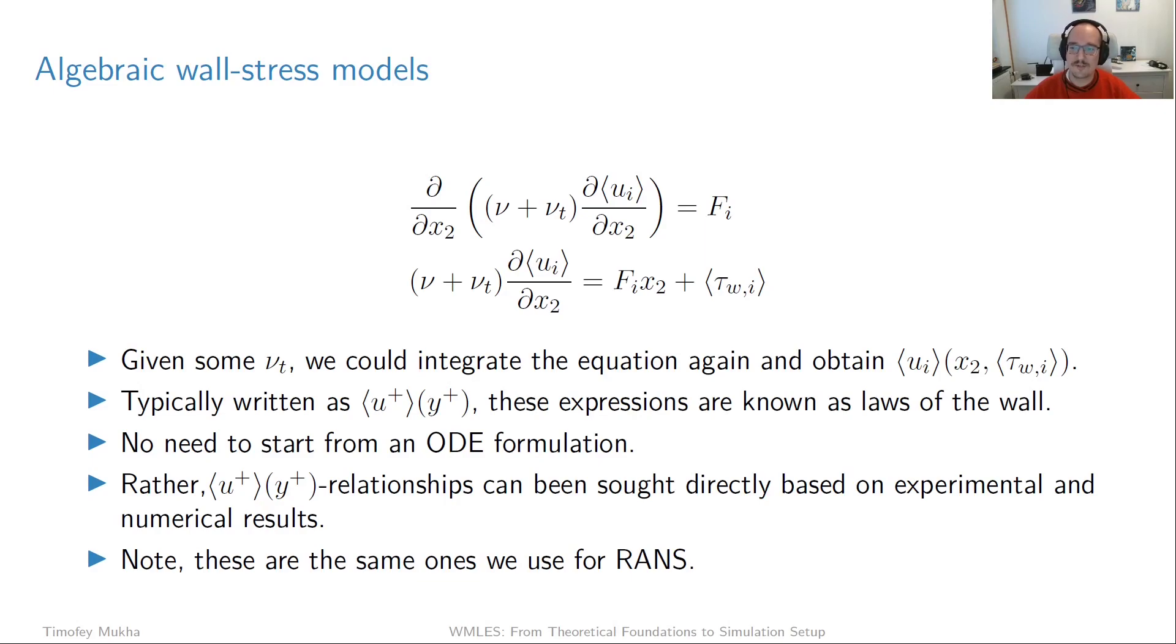In order to arrive to an algebraic wall stress model, we're going to start with the ODE formulation here. You might want to recall that this Fi is the effect of pressure gradient plus the effect of acceleration term. So what we did for ODE models is we said we can integrate this once in the wall normal direction and then we arrived to this equation where we have wall stress as a term.